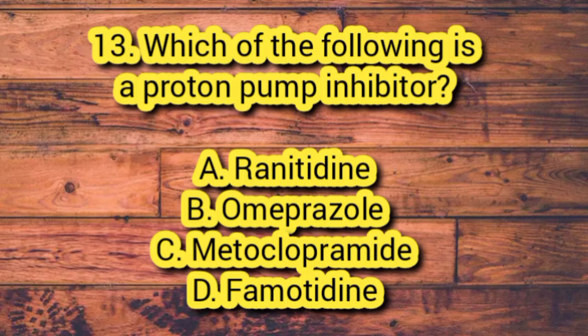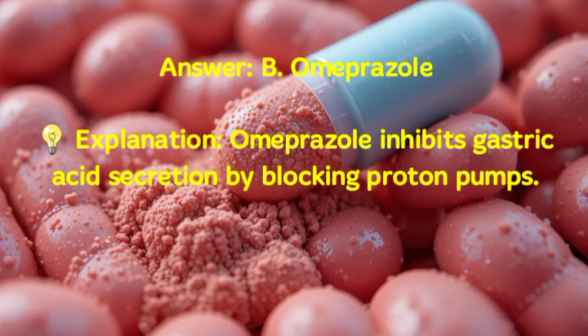Number 13. Which of the following is a proton pump inhibitor? A. Ranitidine. B. Omeprazole. C. Metoclopramide. D. Famotidine. Answer: B. Omeprazole. Explanation: Omeprazole inhibits gastric acid secretion by blocking proton pumps.